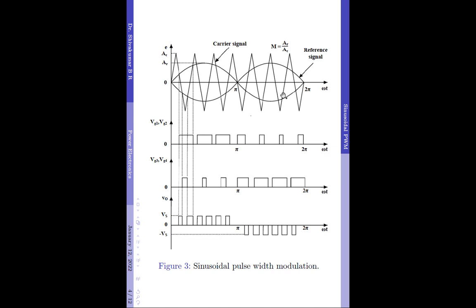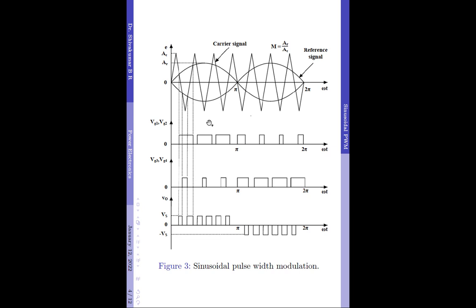Let us now understand how a sinusoidal pulse width modulation technique works. As you can see here, a sinusoidal reference signal of frequency FR is compared with a triangular carrier signal of frequency FC. Whenever the two waveforms overlap, a pulse is generated to drive the base of the transistor in the full bridge inverter circuit. Note that the reference and carrier signals overlap more than once in each half cycle, and therefore multiple pulses will be generated in each half cycle. This is very similar to multiple pulse width modulation, where the number of pulses created per half cycle can be controlled by the frequency of the carrier signal.